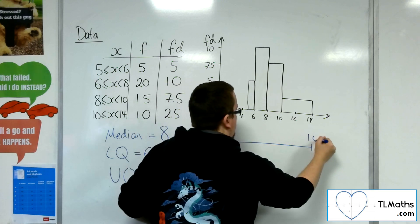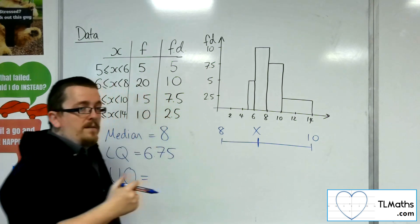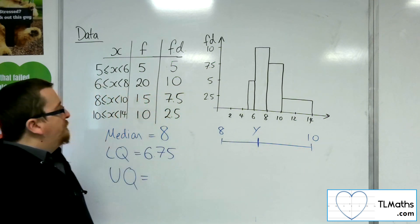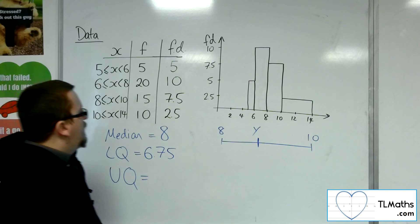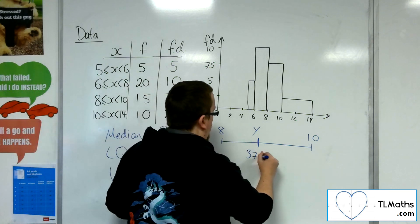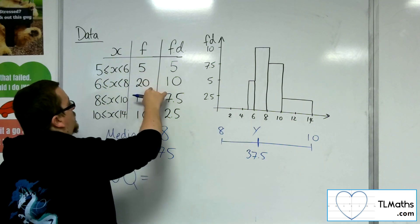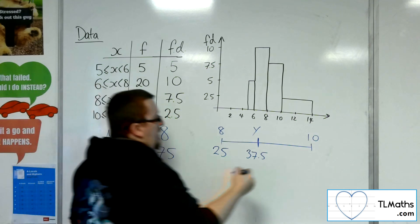So here's 8, here's 10, and that value I'm now looking for, let's call it Y, just so we've got a different letter. And we are looking for the 37.5th data point. We know at the beginning of the group, we hit 25 data points. And at the end of the grouping, we're at 40.